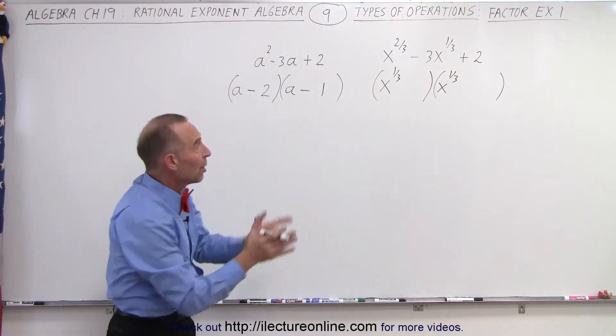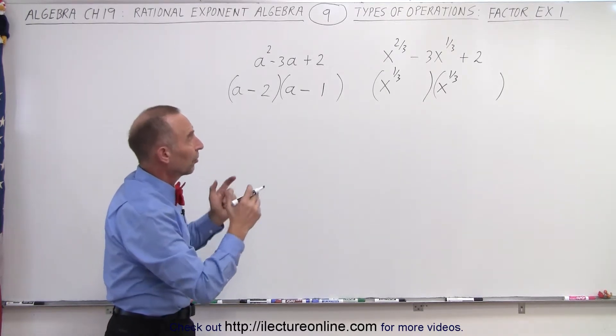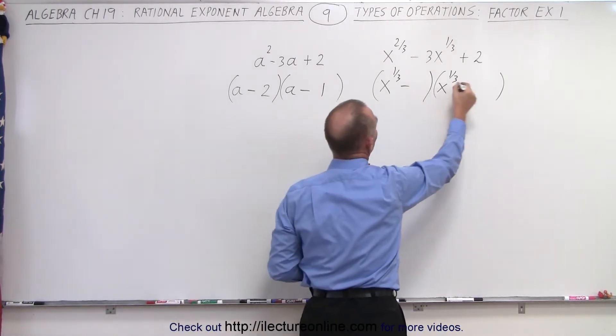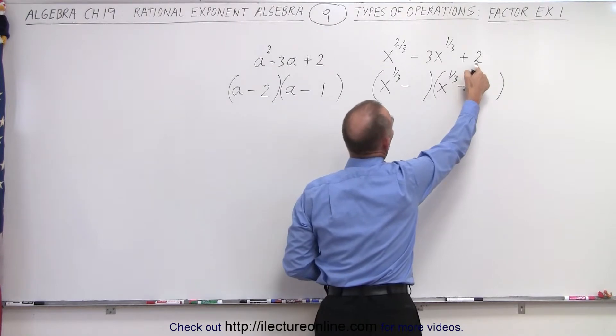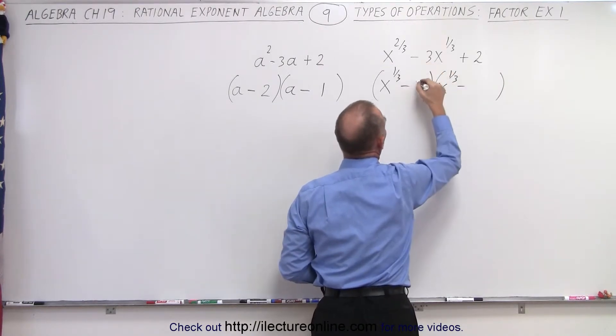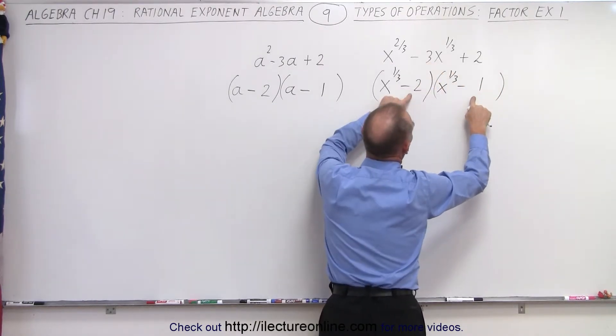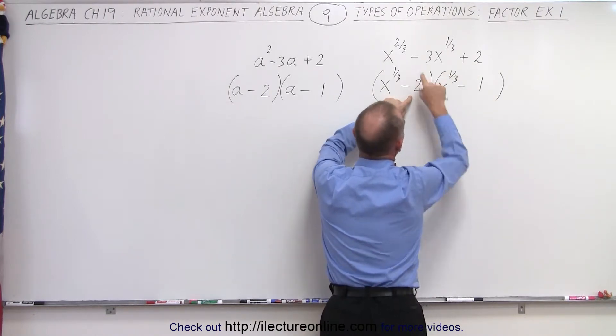Remember, when the bases are the same, we add the exponents. The signs will be exactly the same, negative and negative. To get a positive 2 here, negative 3 there, we need a 2 and a 1. When you multiply, you get a positive 2. When you add, you get a negative 3.